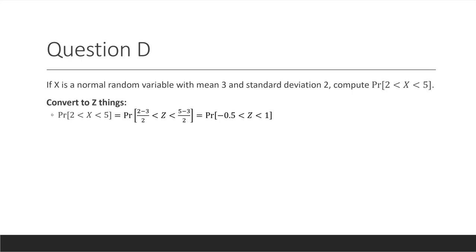And when we do this, we get the probability of negative 0.5 is less than z is less than 1. Now we compute.